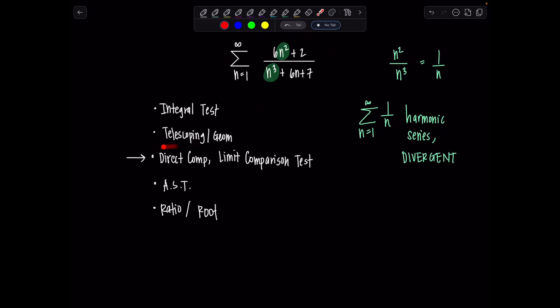So if I were to try to use direct comparison, for direct comparison I would need to show that the terms of my series, 6n squared plus 2 over n cubed plus 6n plus 7 are greater than the terms of the harmonic series. Can I do that? Not in any clear way. So when it looks like you're not going to be able to show that inequality, it doesn't mean that your series isn't going to diverge. It just means instead what we need to do is use limit comparison test.